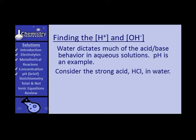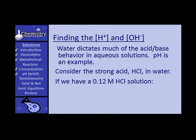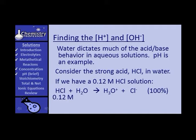Suppose we take the strong acid HCl in water, and suppose we have a 0.12 molar HCl solution. We know it's a strong acid, and the definition of a strong acid is one that dissociates virtually 100%. So if we put HCl in water, and we start with 0.12 molar HCl, we get 0.12 molar H+ ion and 0.12 molar chloride ion. It breaks into two parts and ionizes.